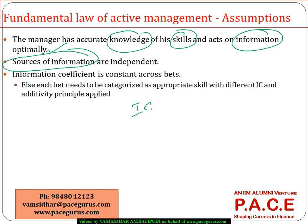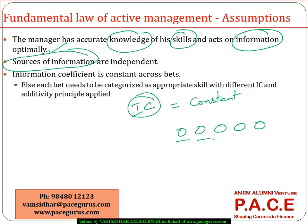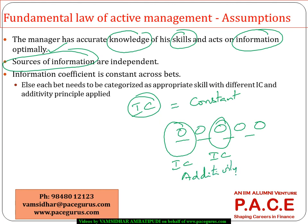Another assumption is that the information coefficient is constant across all forecasts — meaning the skill required to forecast each security is the same. If different securities require different skills, they must be classified into skill-based buckets, with a separate IC computed for each, and the additivity principle used to arrive at the overall information ratio. Understanding these assumptions and the relationship between optimal risk levels and risk aversion helps maximize the information ratio.